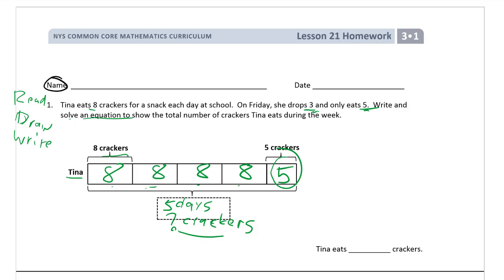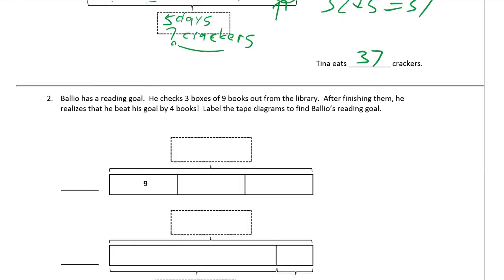So looking at this, we see we have 4 eights. So that's 4 times 8 which is 32. And then we have to add these 5 because you can't multiply that because it's not an 8. So 32 plus 5 equals 37. Tina eats 37 crackers. We should get a little bit trickier as we go.